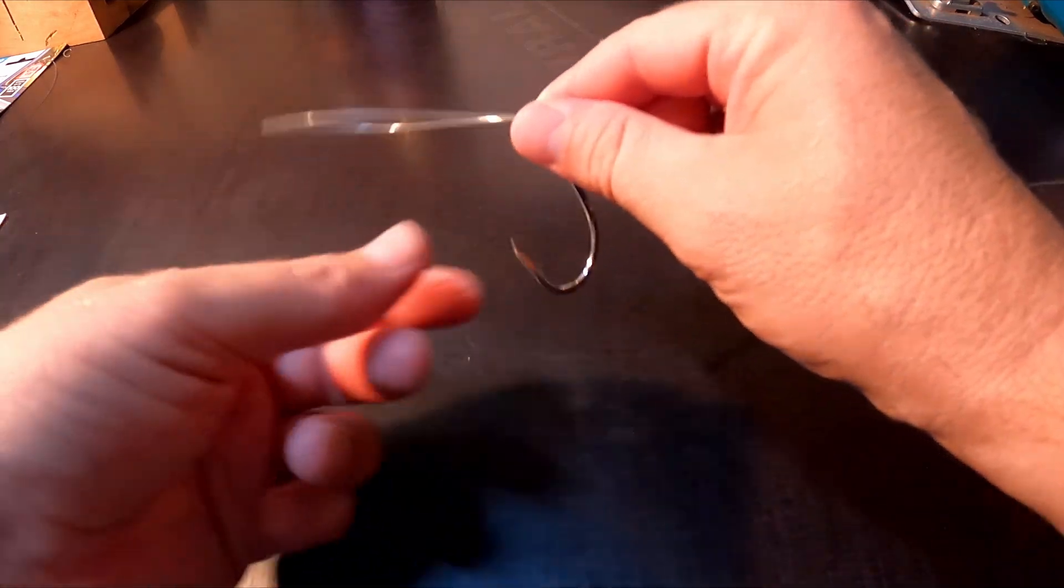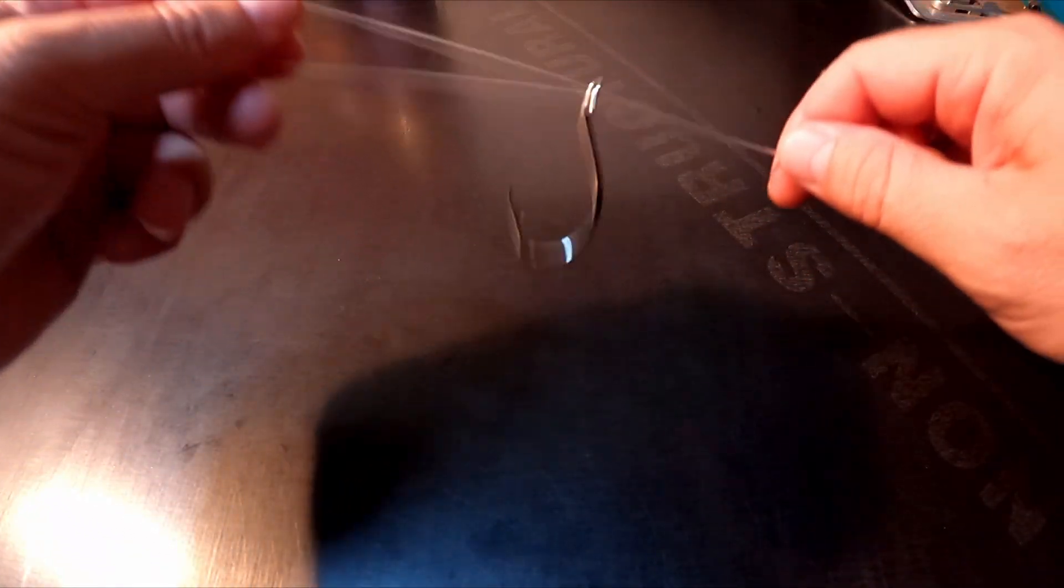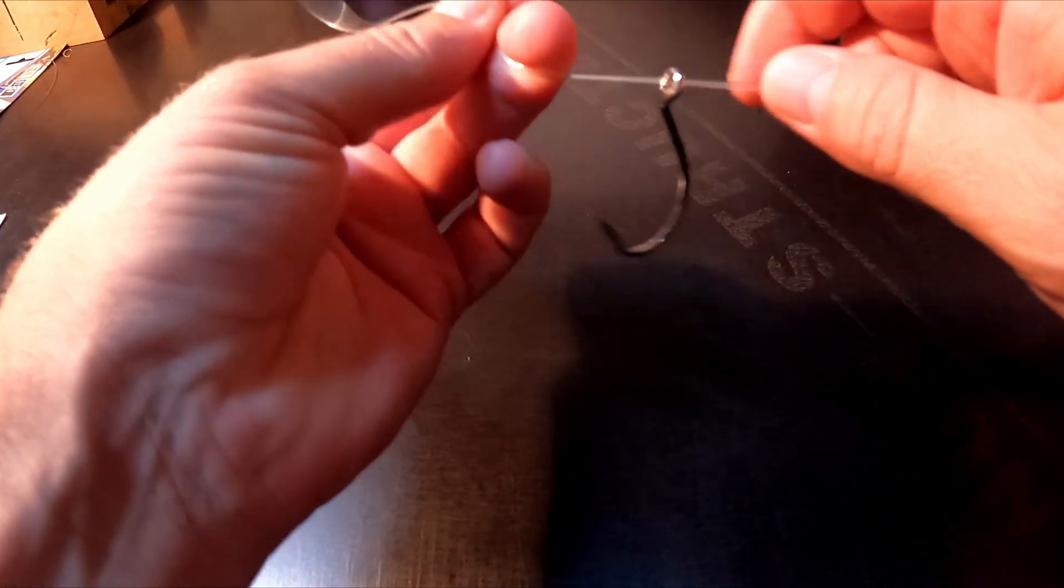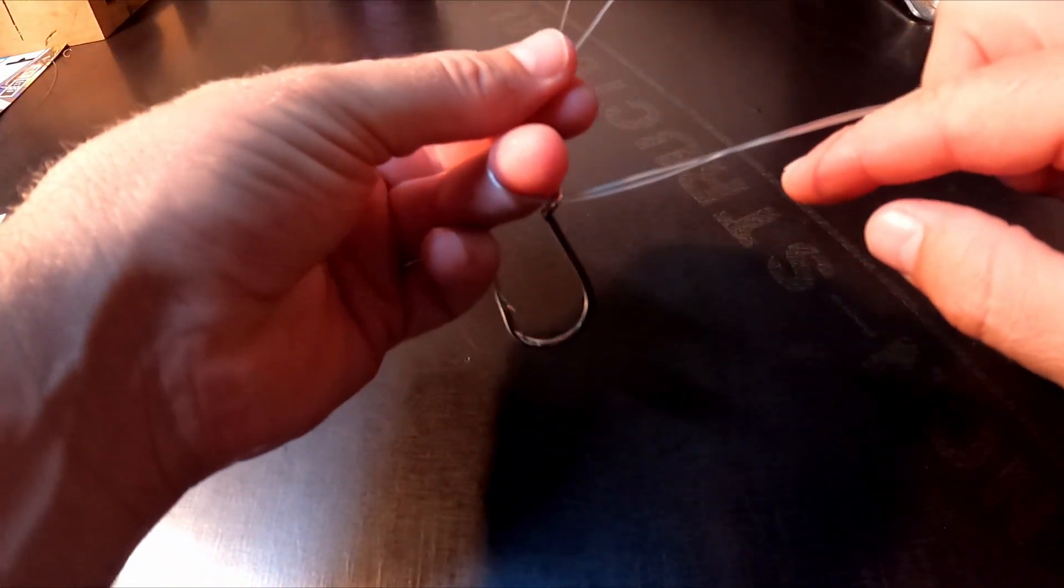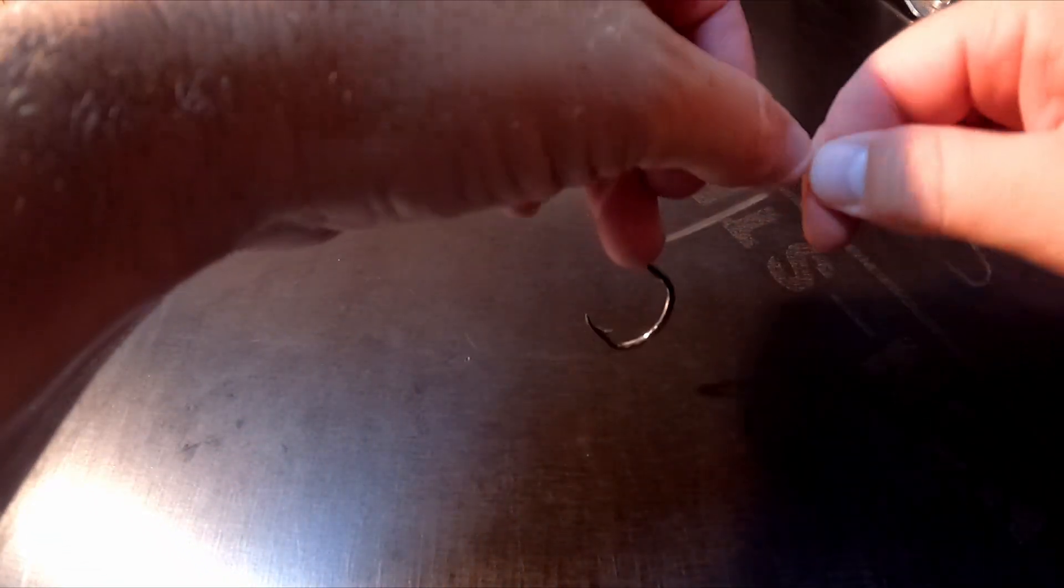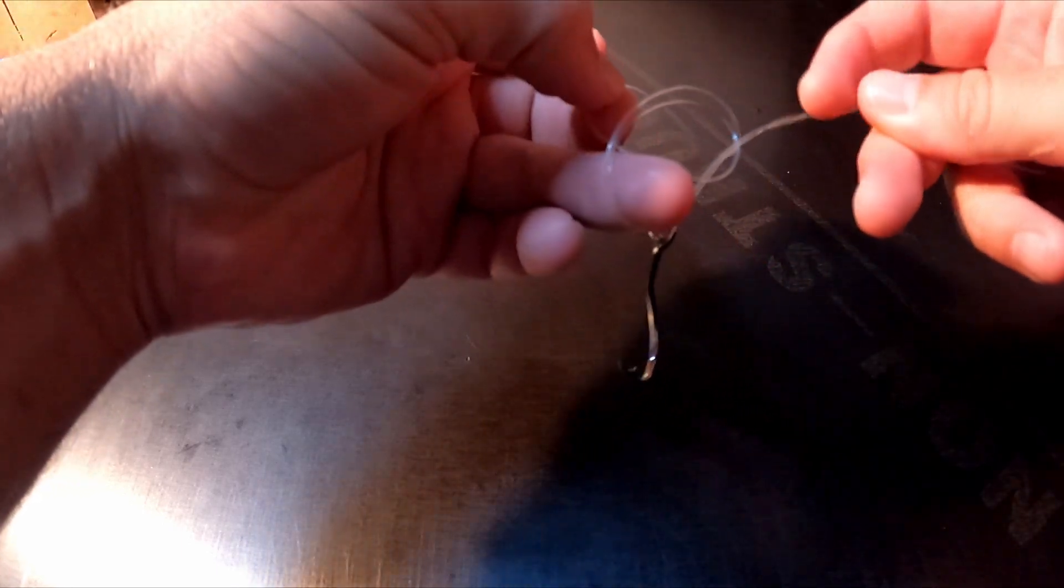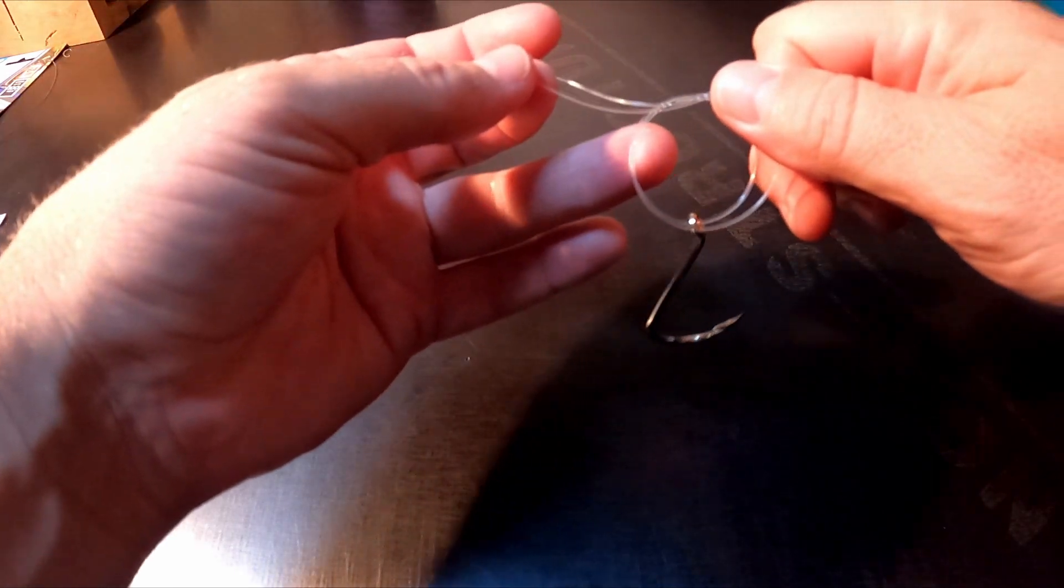Like so, so your hook is through the doubled up line. Your next step is you want to do a very simple overhand knot, just like so. Now you can do what they call a double Palomar or triple Palomar by continuing to wrap it two or three times when you're doing your overhand knot, but in this case we're just going to do it once.